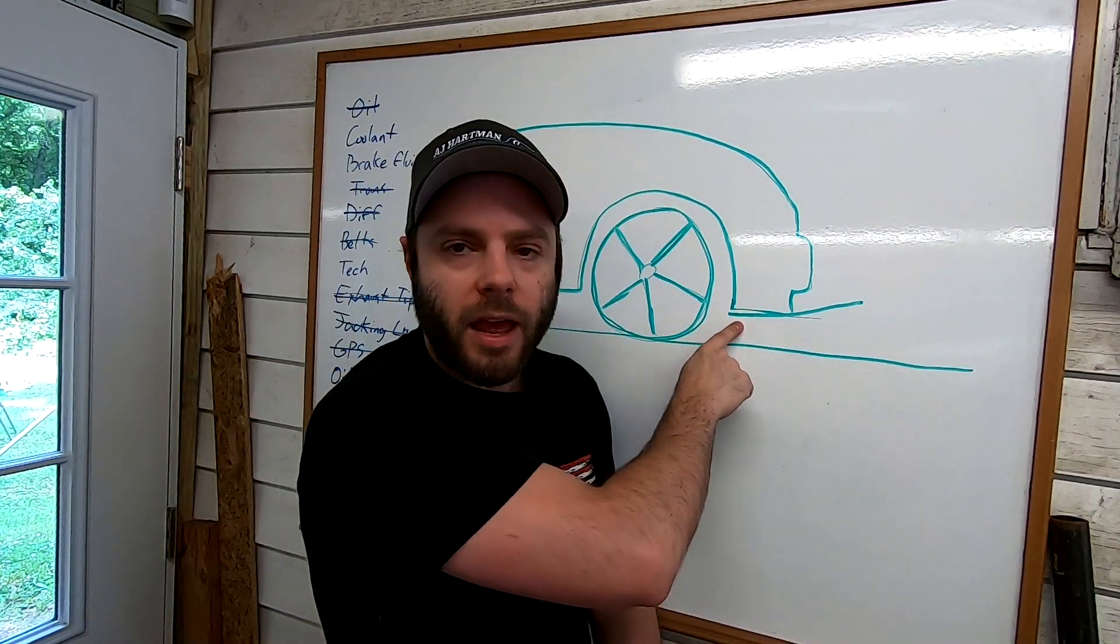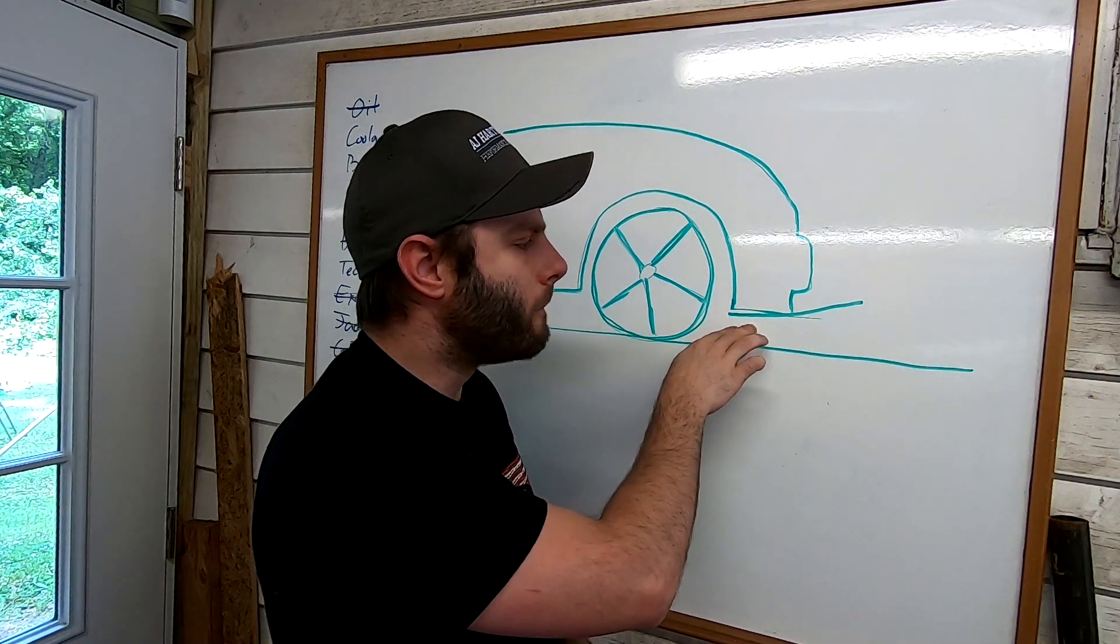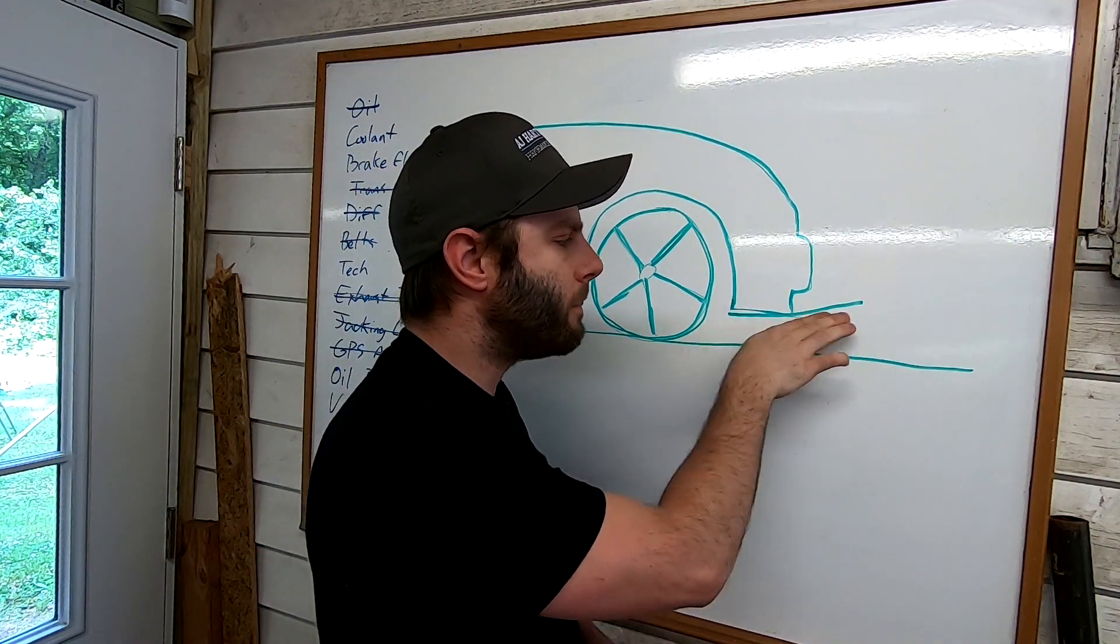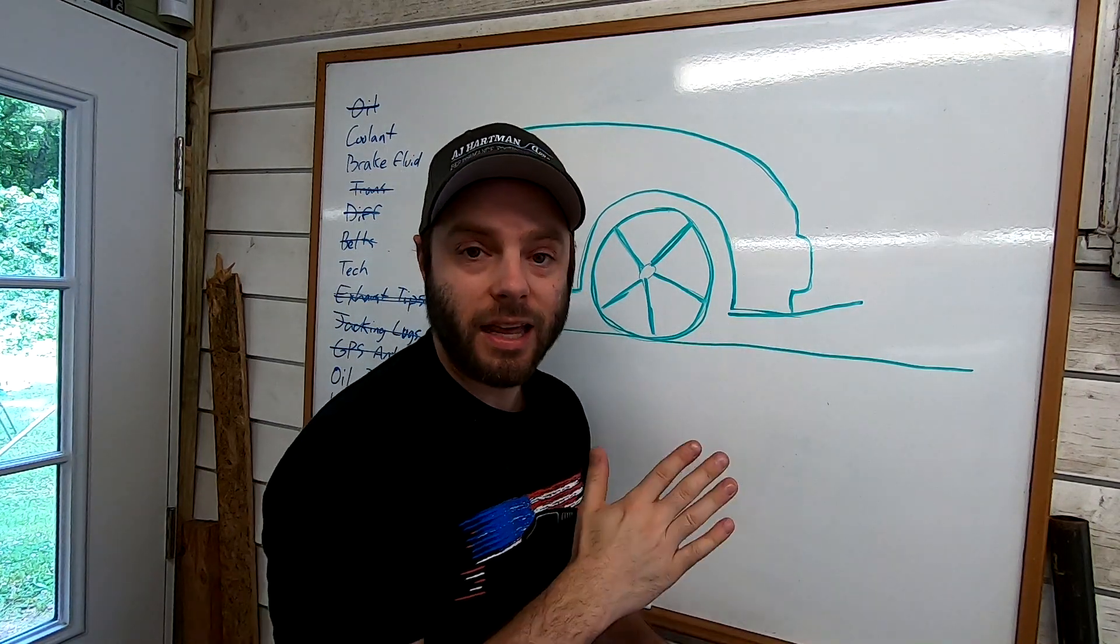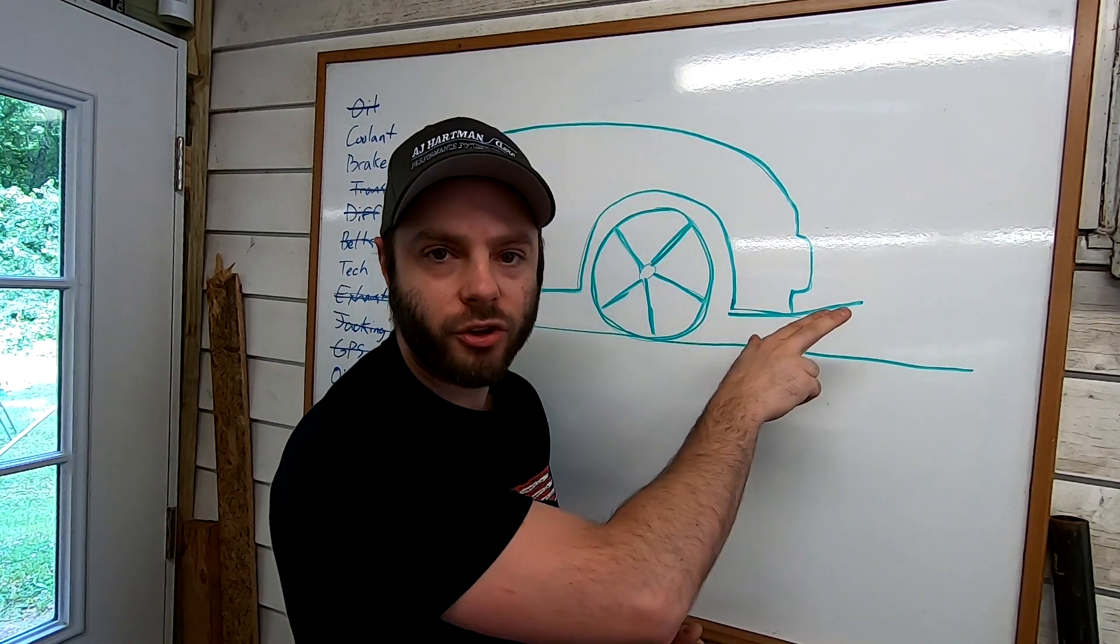For example, the Tyspeed BMW, when the splitter was put on with an upward angle, we actually made front lift for a little bit despite having a huge splitter on it.